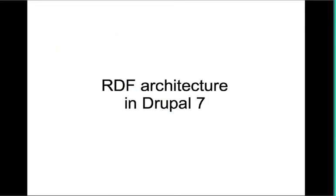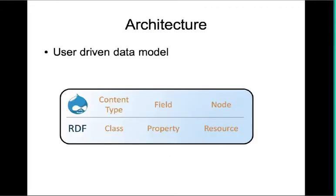Now let's look at the architecture used for modeling RDF in Drupal 7. There is no fixed data structure in Drupal — it's user-driven because site administrators can build their data models as they want. They create content types, add fields to those content types, then create nodes. When we export to RDF, we map each concept: content types become RDF classes, fields become RDF properties, and nodes become resources in RDF.